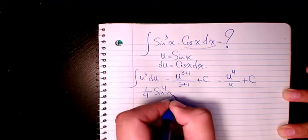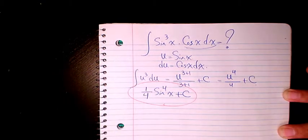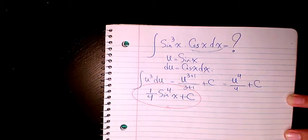So it's going to be 1 over 4 sin⁴(x) plus C. So that's the final answer. I hope you enjoyed this video. Please leave me a comment if you have any questions and I'll get back to you as soon as possible. Thank you.